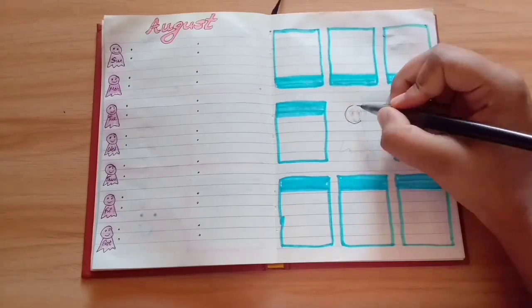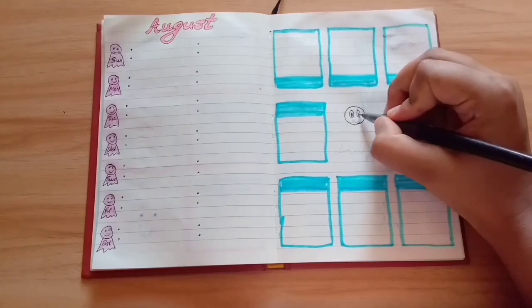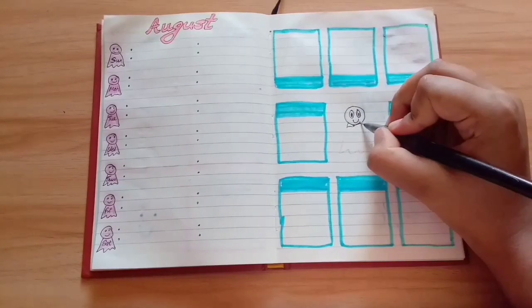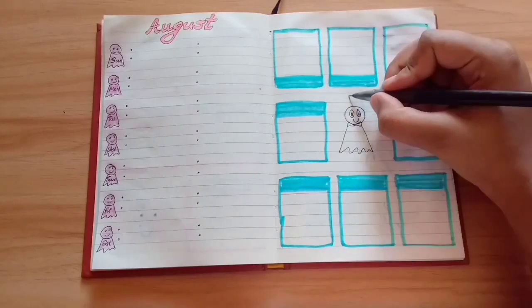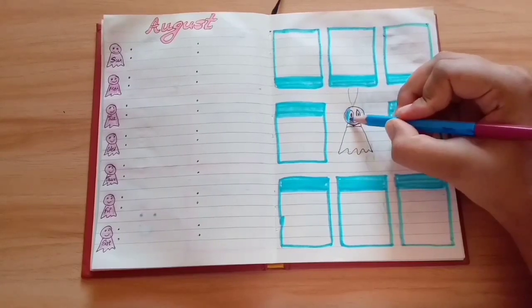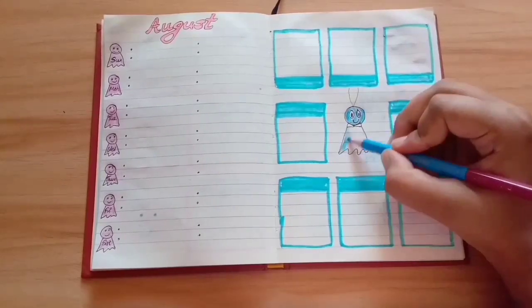And then you can add a cute little doodle at the center, because there is always enough space for some cute doodles. Now you can add some color to your doodle and finally write down the name of the days in the boxes.